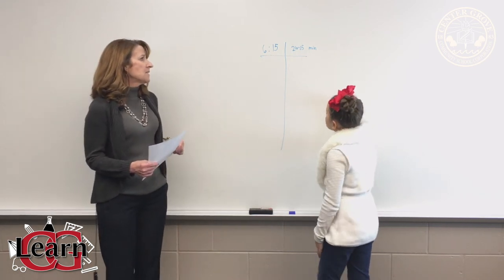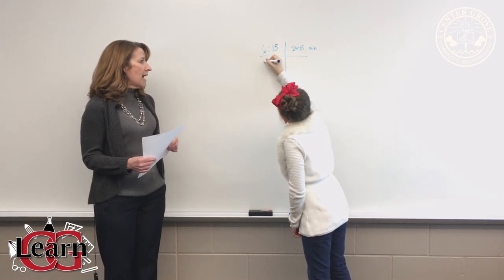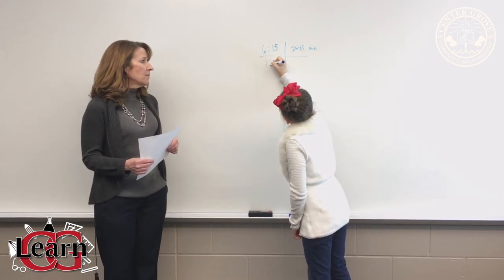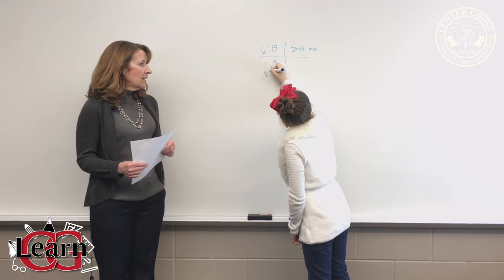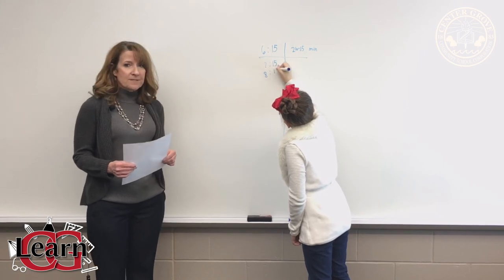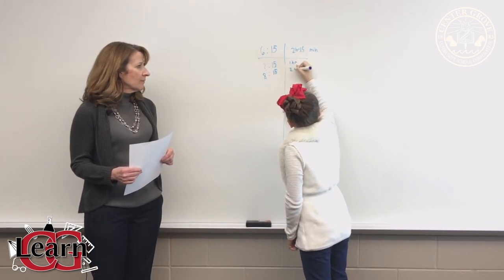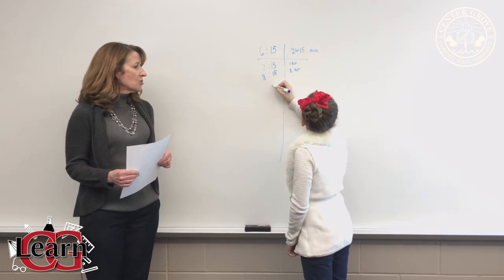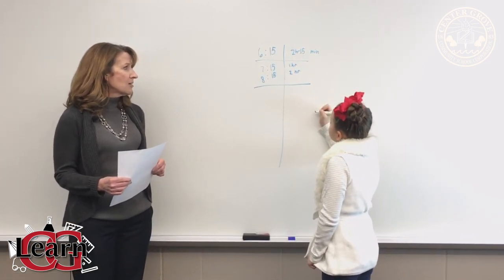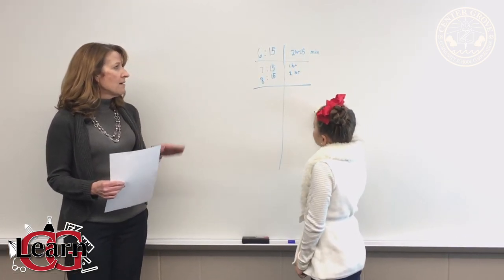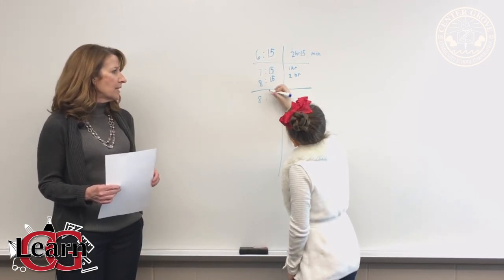She'll start at 6:15 and add her two hours, adding one hour at a time — 7:15 and 8:15. She'll draw her line to show that she's finished with hours, and now she's going to write 5, 10, 15 to keep track of her minutes.